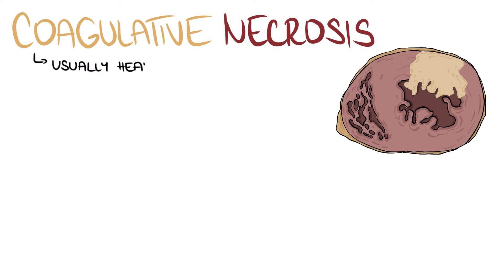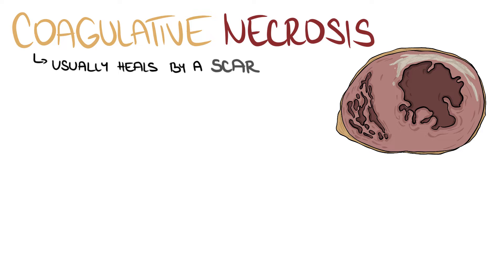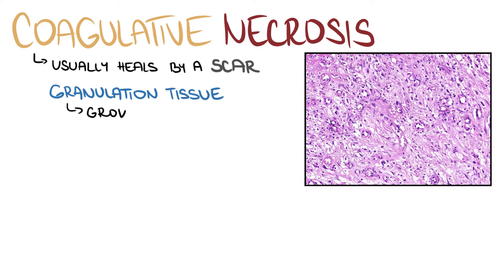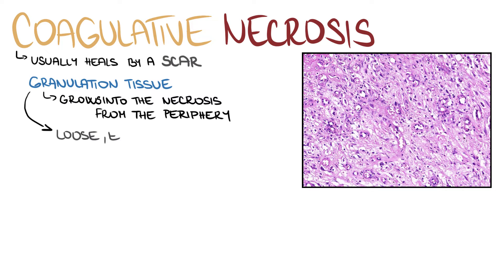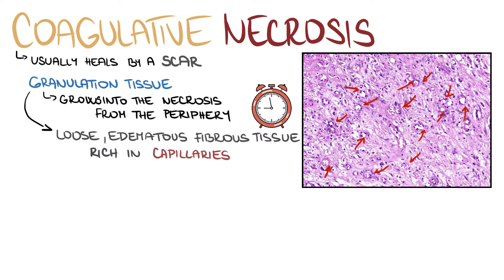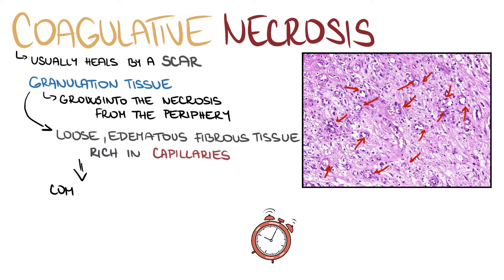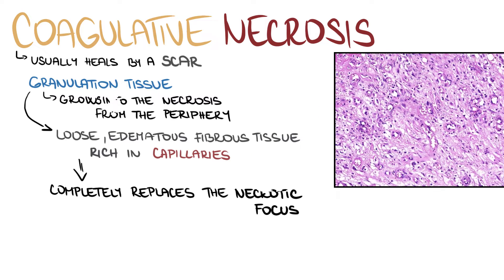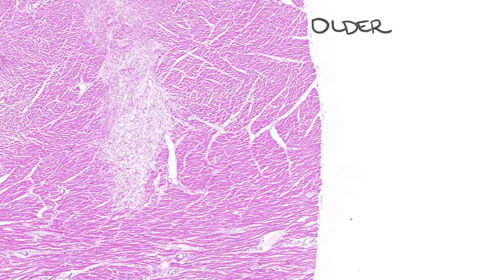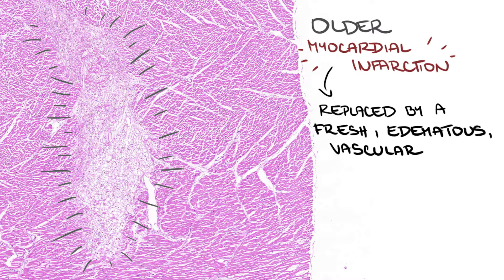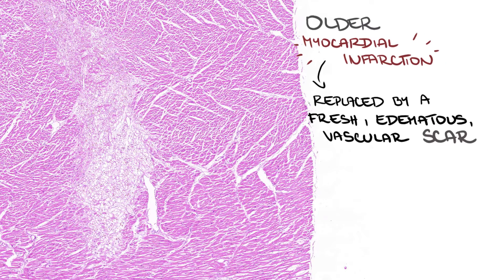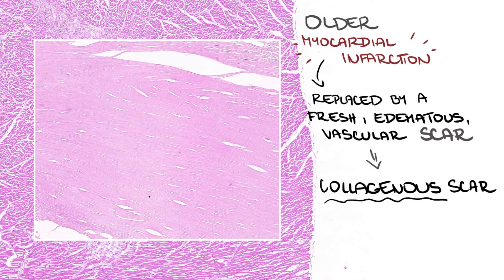Coagulative necrosis usually heals by a scar. In the first phase, granulation tissue starts to grow into the necrotic tissue from the periphery. The granulation tissue is, in fact, a loose and edematous fibrous tissue rich in capillaries. In the course of time, the granulation tissue completely replaces the necrotic focus. In the picture, you can appreciate an older myocardial infarction replaced by a fresh edematous and still vascularized scar. Later on, the fresh scar will be replaced by a definite, more compact and collagenous scar.